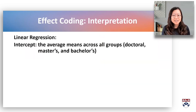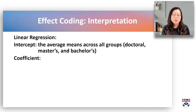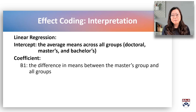In linear regression, the intercept is the grand mean of the dependent variable for all the groups — in our case, the average mean across all groups including doctoral, masters, and bachelors. The coefficient represents the difference between the mean of the group coded 1 and the grand mean of all the groups, so it represents the effect of being the coded-1 group. In our case, beta 1 is the difference in means between the masters group and all three groups: doctoral, masters, and bachelors.